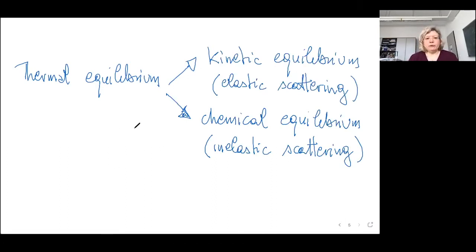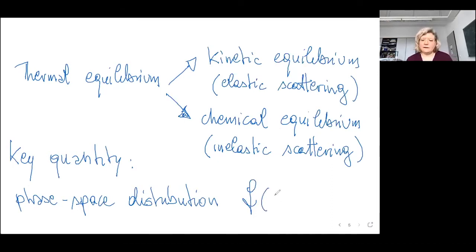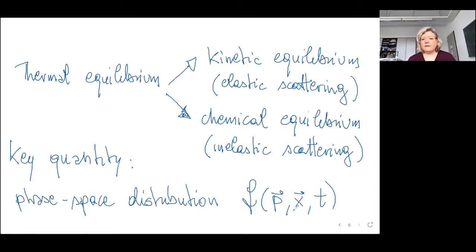We could have kinetic equilibrium while going out of chemical equilibrium — fixing the number of particles of a particular species while they remain in a thermal-spectrum distribution. This is exactly what we think happened for certain particles. To describe a particle in thermal equilibrium the key quantity is the phase-space distribution function — the distribution of particles in phase space as a function of momentum, position, and time.